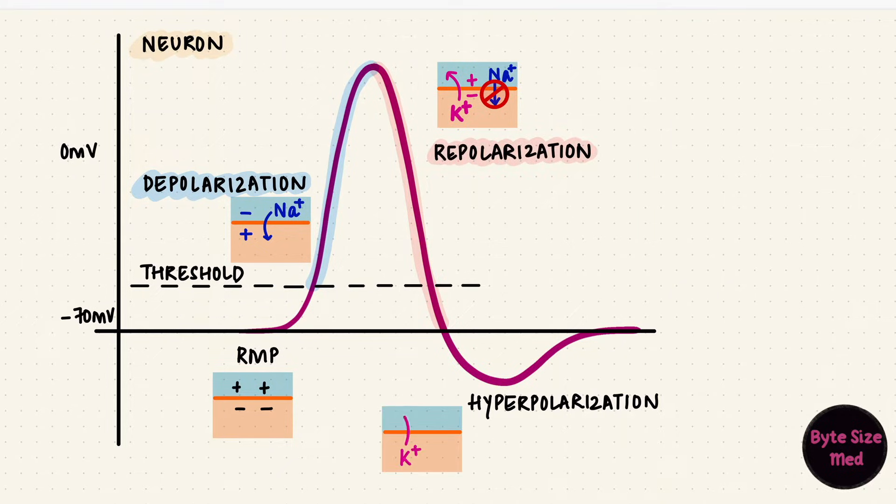These channels are slow to close, so the potential becomes more negative than that. That's hyperpolarization. Then the channels close and it comes back to rest again.